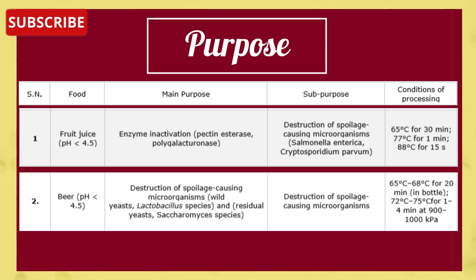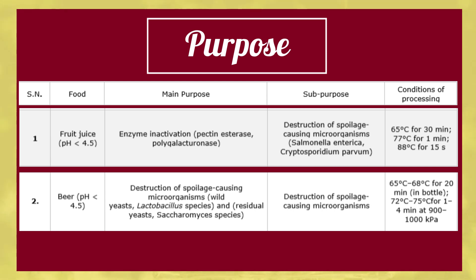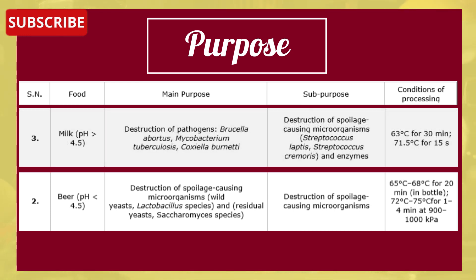The next product is beer. The main purpose is the destruction of spoilage-causing microorganisms such as wild yeast, Lactobacillus species, and residual yeast such as Saccharomyces species. Conditions of processing are 65°C to 68°C for 20 minutes in bottle, or 72°C to 75°C for one to four minutes at 900 to 1000 kilopascals.